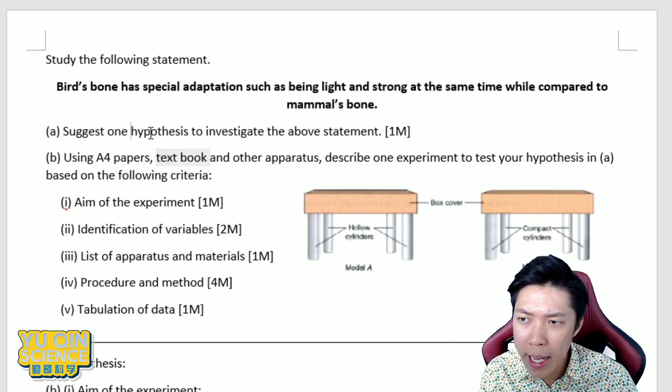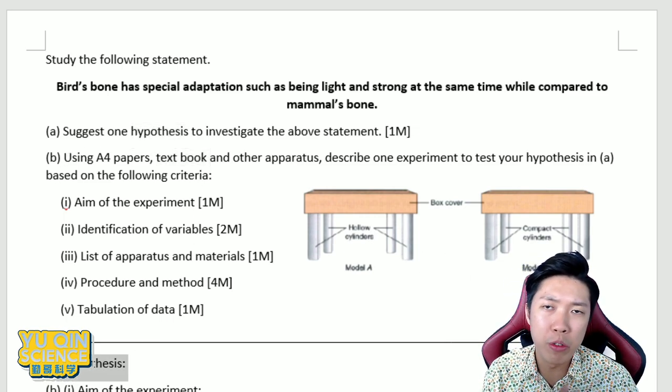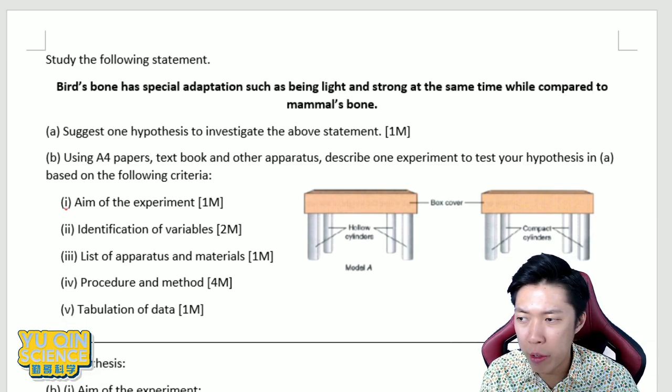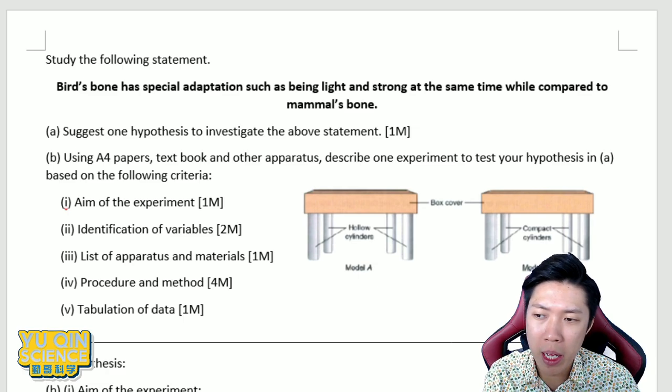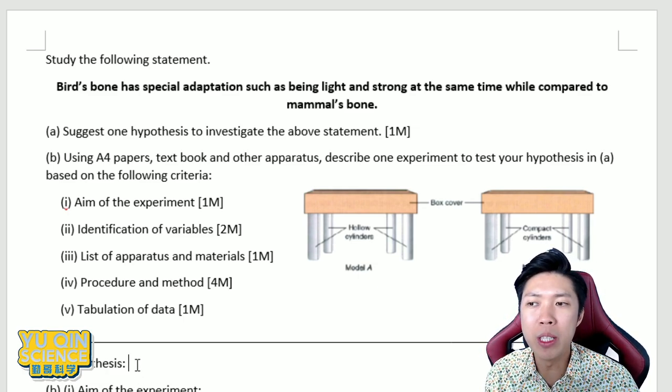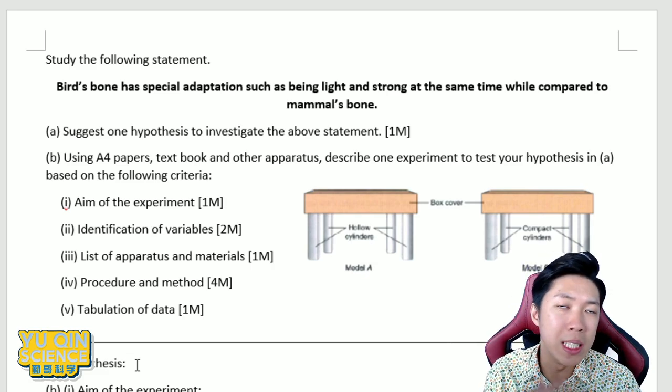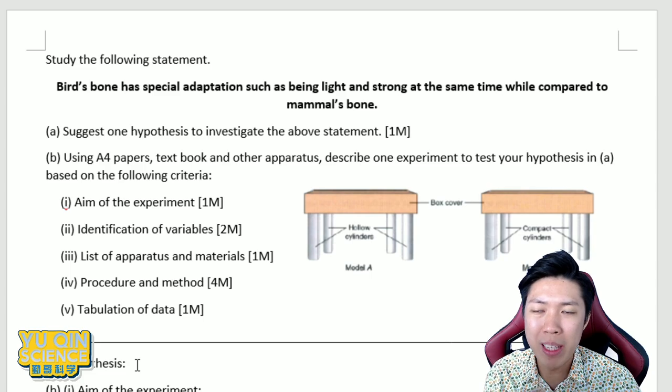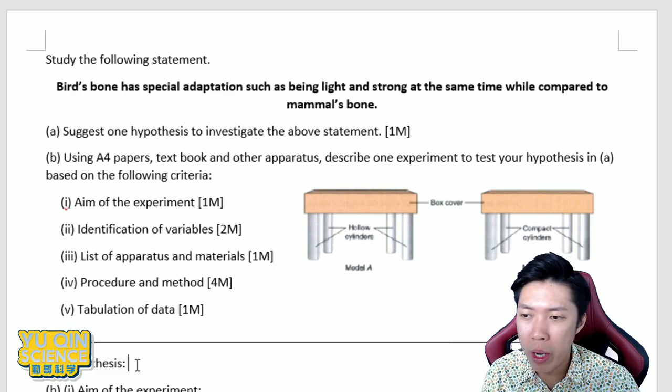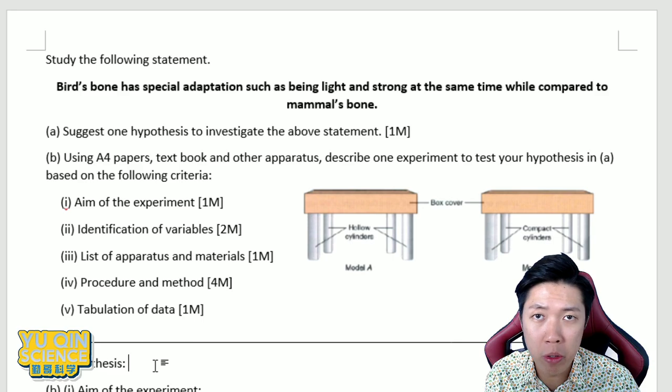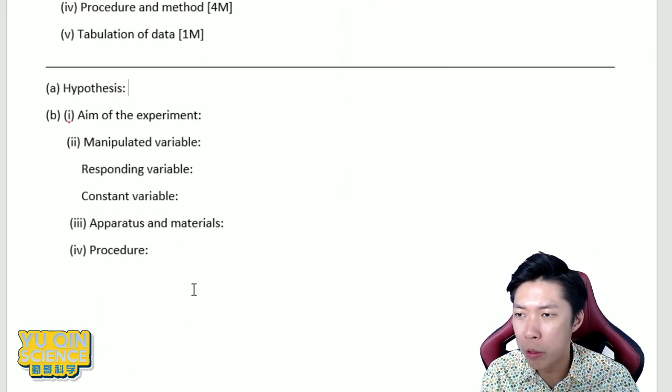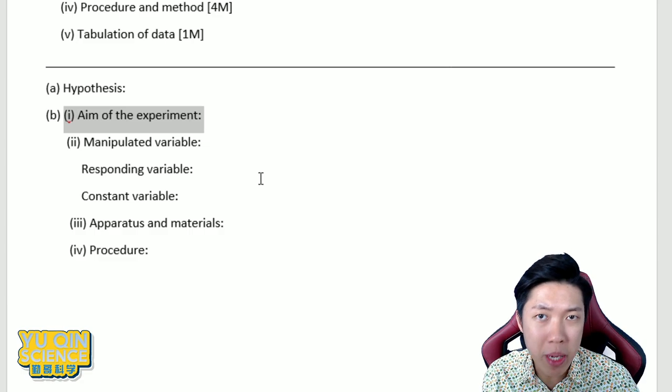The original experiment from the textbook - let me show you the picture. We are going to use hollow cylinders made of A4 papers, hollow and compact. Compact means probably you have to roll a lot together. So hollow means empty on the inside. And then we put a box cover and then we will place textbook on top. And we will count how many textbooks it takes to collapse model A or model B to prove which one is stronger. That's the background you need to have for different experiments.